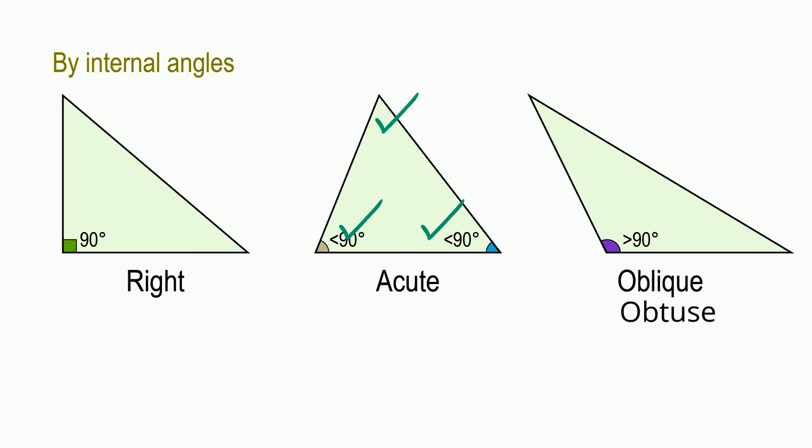An obtuse triangle is a triangle with one angle greater than 90 degrees. And a right triangle is a triangle with one angle that is equal to 90 degrees.